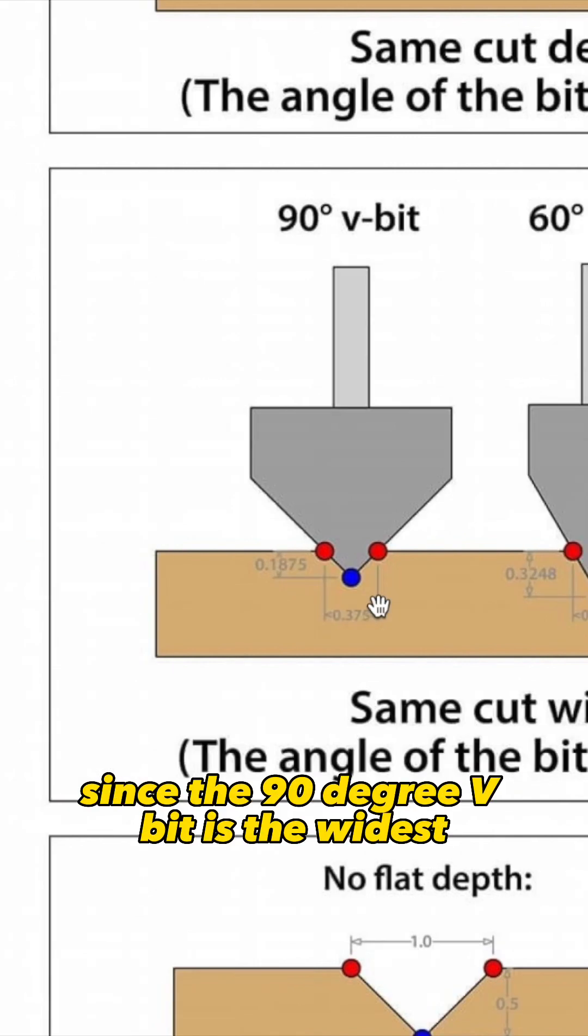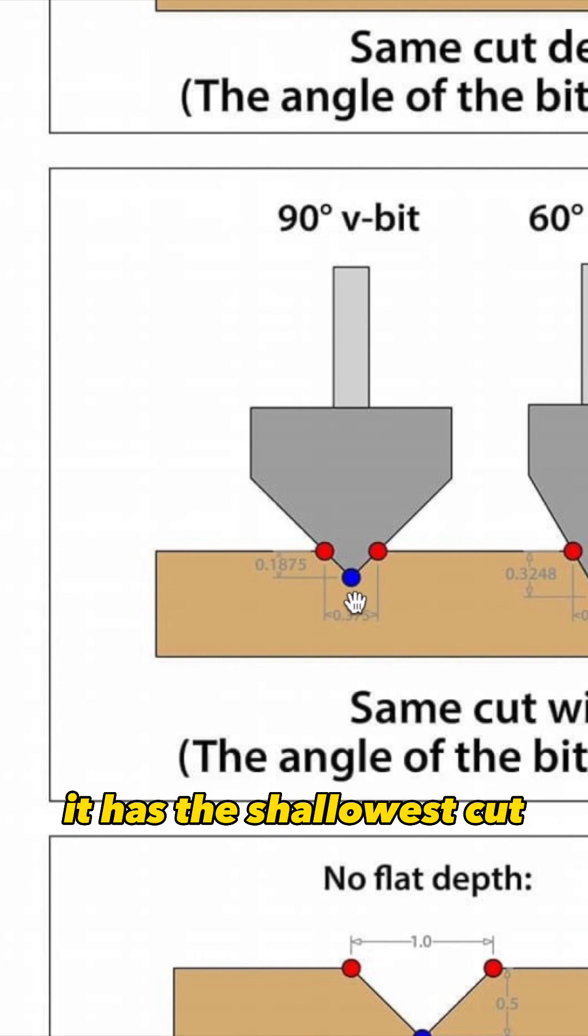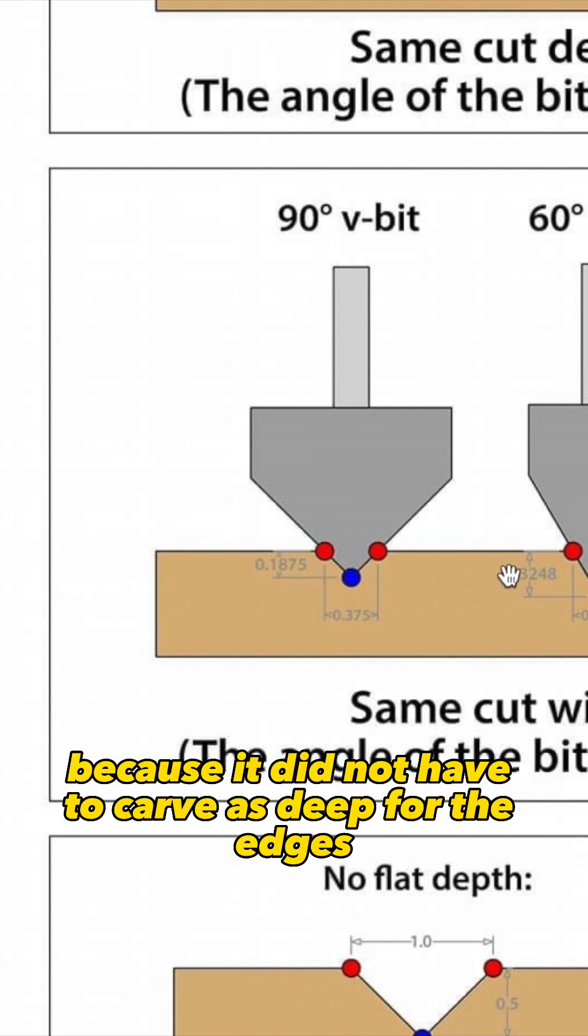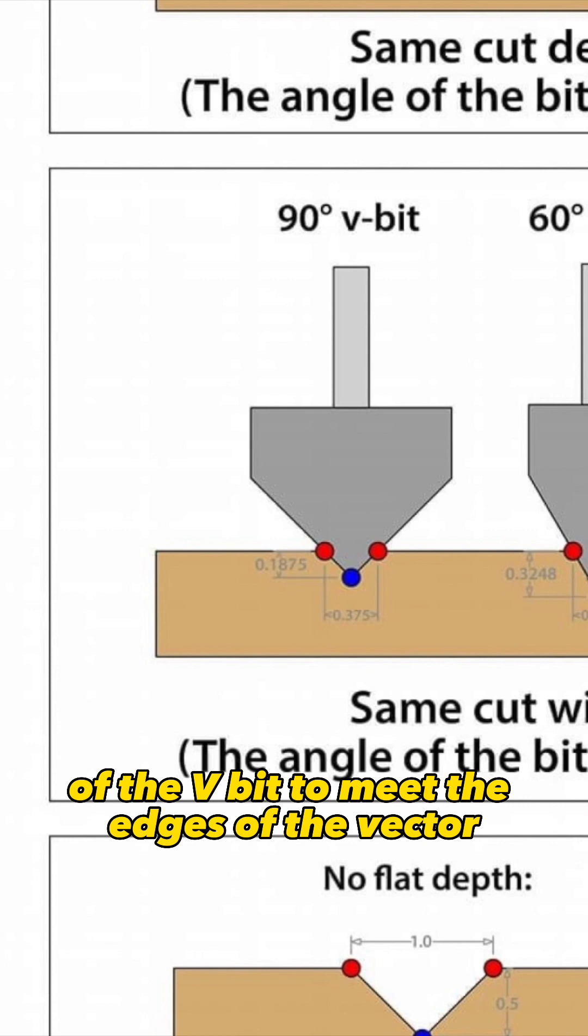Since the 90-degree v-bit is the widest, it has the shallowest cut because it did not have to carve as deep for the edges of the v-bit to meet the edges of the vector.